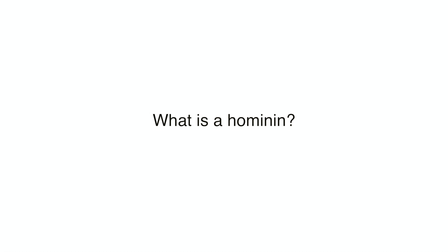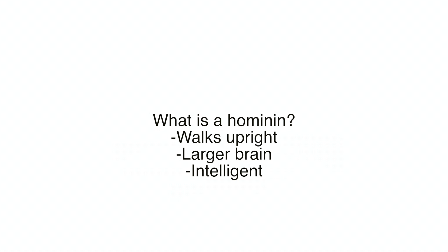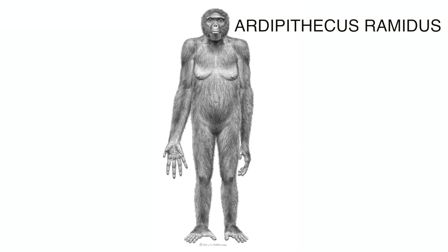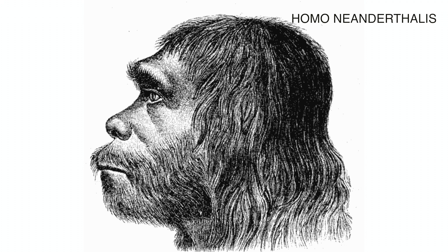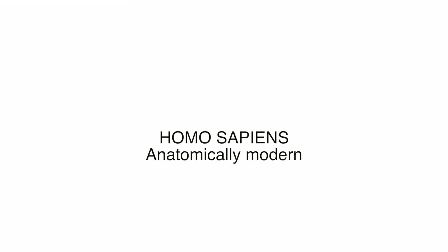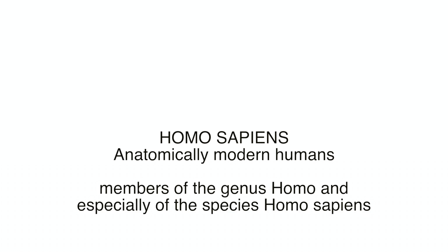What differentiates a hominin from apes is its higher intelligence due to a significantly larger brain, and the ability to walk upright. Hominin evolution is the next step to becoming modern humans. They started with Ardipithecus rhamidus, continuing with Australopithecus afarensis, Homo habilis, Homo erectus, Homo neanderthalus, and eventually ended with us — Homo sapiens, or anatomically modern humans. In other words, members of the genus Homo, and especially of the species Homo sapiens. Or let's just say, people.